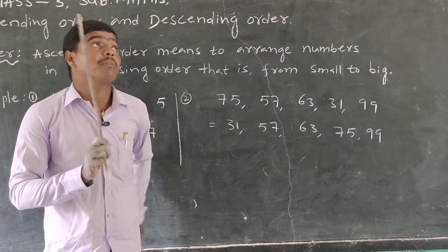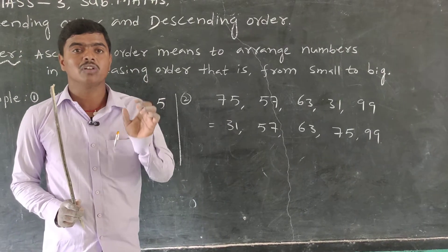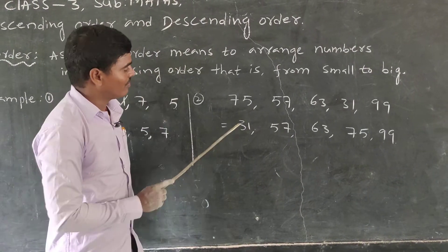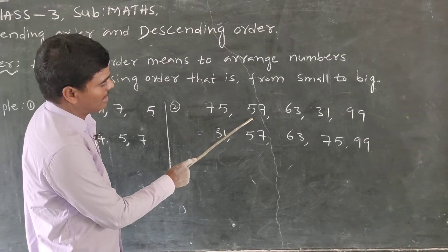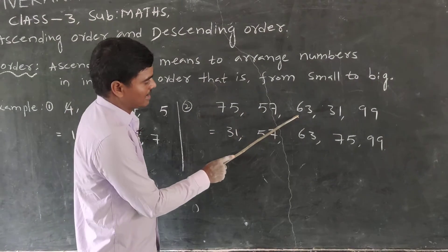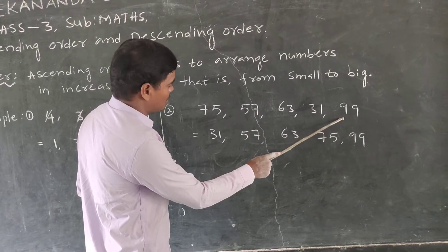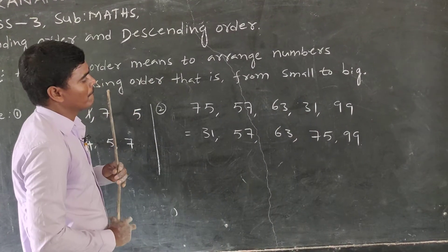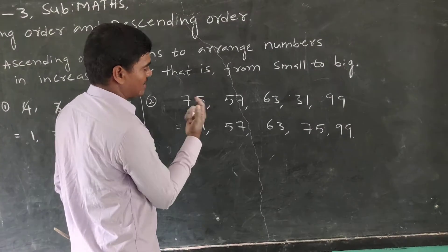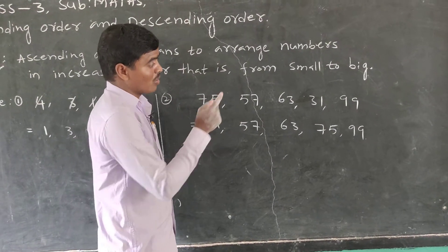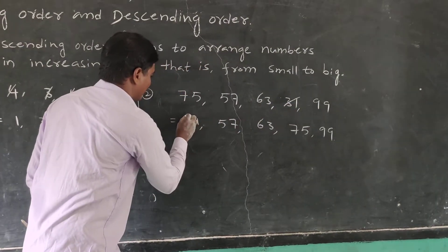Ascending order means small to big. First, find out the smallest number. Here we have 75, 57, 63, 31, and 99. The smallest number is 31. Write 31 first.